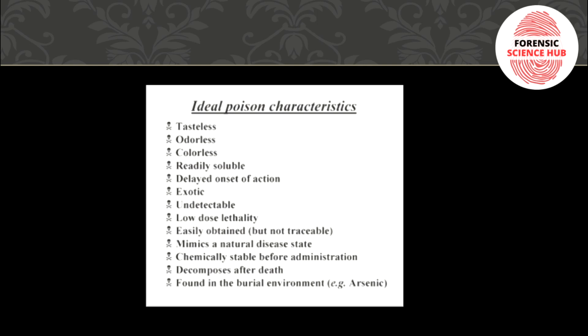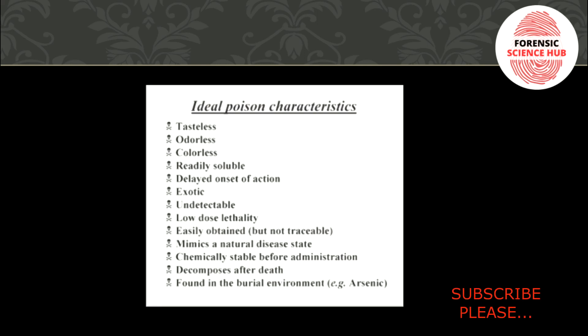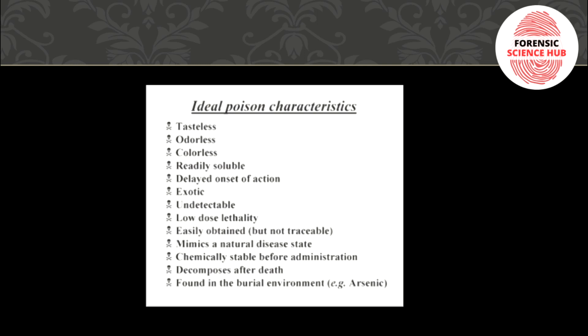Now there are certain ideal characteristics of poisons. These are not applicable to all poisons, but the ideal characteristics include that they should be tasteless, odorless, and colorless. They should be readily soluble, have a delayed onset of action — meaning they should not work instantly. They should be exotic, undetectable, have low dose lethality so that even a small amount leads to death, be easily absorbed, easily obtained but not traceable, mimic a natural disease, be chemically stable, decompose after death, and be found in the burial environment.